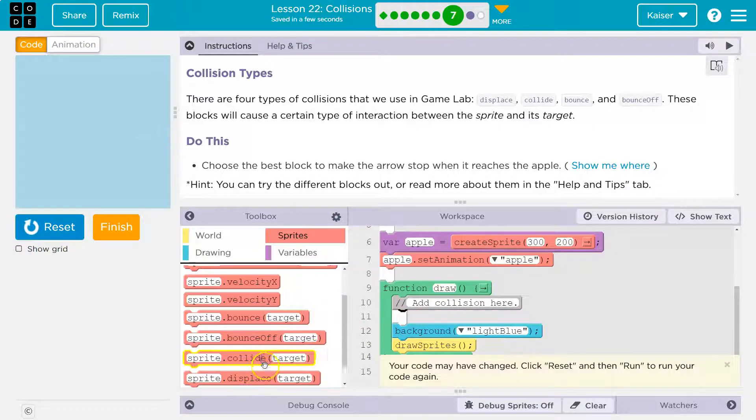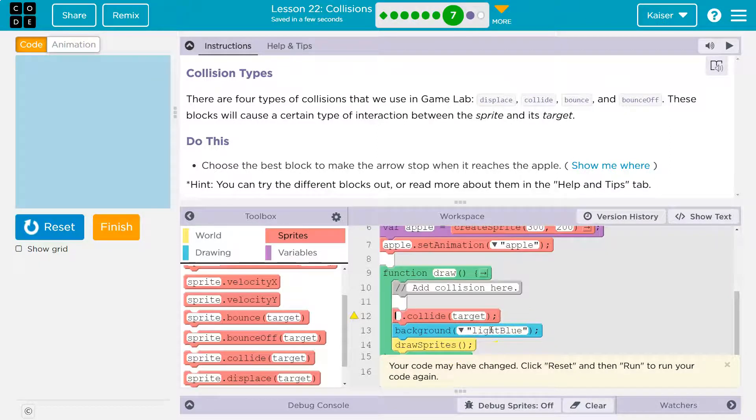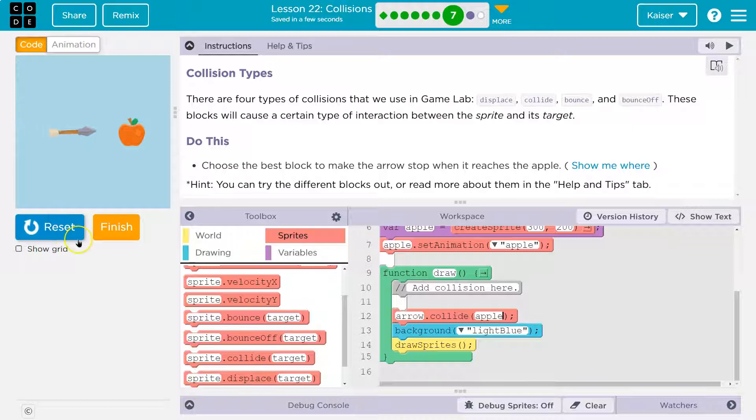What about collide? And again, if you click and get the details in the 'see examples,' that would have made your life a bit easier. But okay, what if the arrow collide? Ooh, that's not how you spell arrow. What if the arrow collides with the apple? There we go!